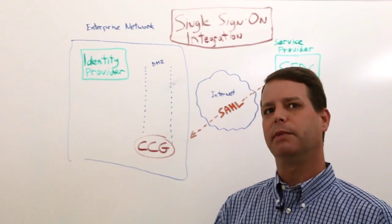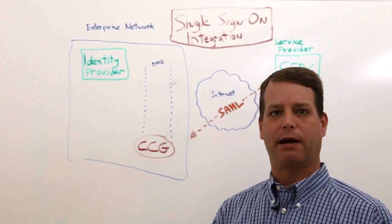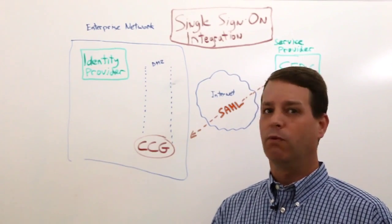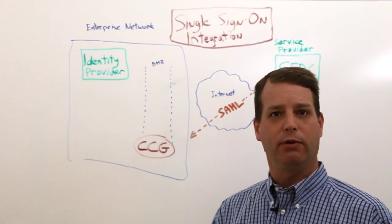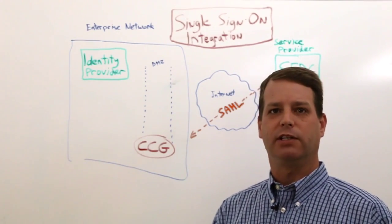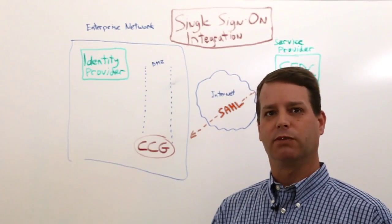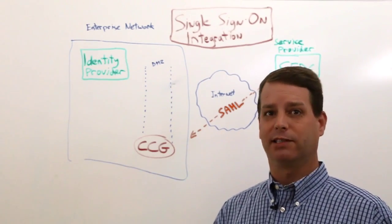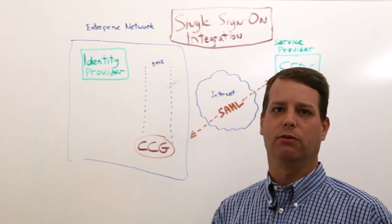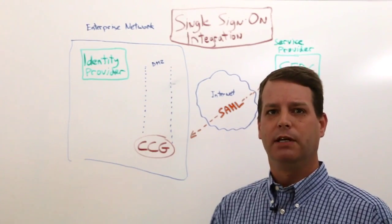We're going to be in the middle of that because we need the user to come back through us, whether they're signing on, running a report, or fetching data. We need them to come through us because we're the encryption gateway, and they're not going to be able to see the decrypted data or even perform the encryption.